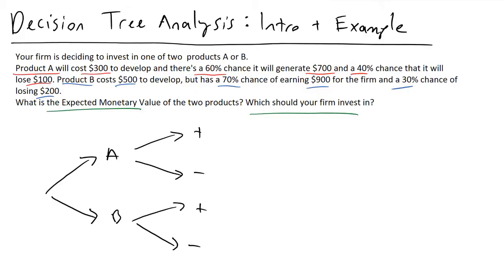As we begin to fill out the information that we've been told, the cost of producing product A is going to be $300. So I'm going to write minus 300 right here. And we know that the cost to produce product B is going to be $500. So I will write minus 500 right there.